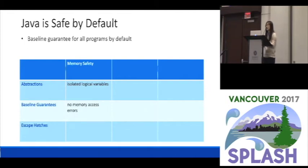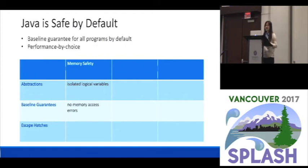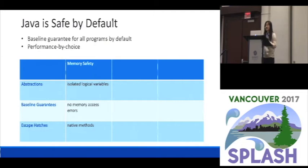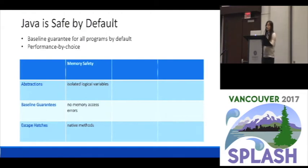Safety usually comes at a cost, and that cost a lot of times is performance. So Java, as an escape hatch, also provides performance by choice — it allows you to write certain parts of your code as unsafe, but you can get better performance. In the case of memory safety, you have native methods. If you write native methods, you don't get the safety guarantee for memory safety, but instead you get better performance. However, it also means that if you want your program to be safe, you have to manually inspect that part of the code that is unsafe.